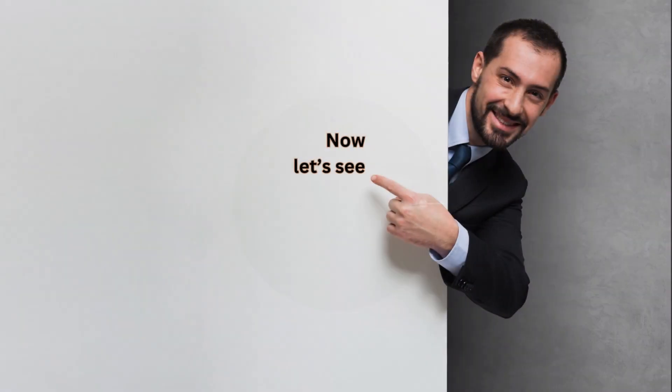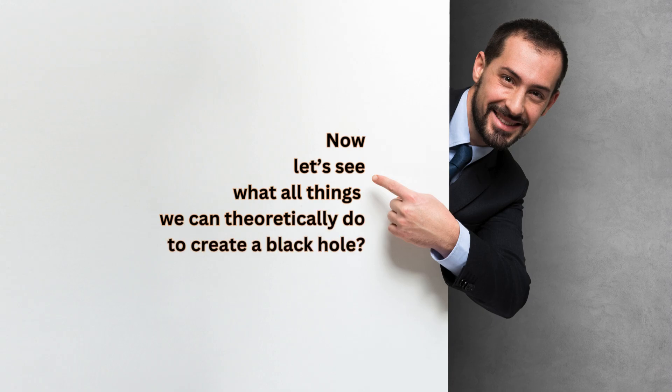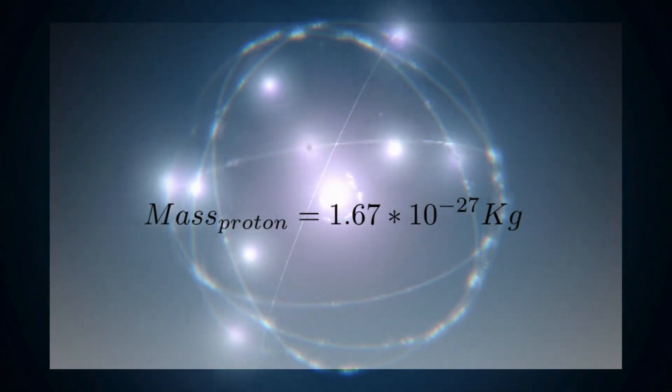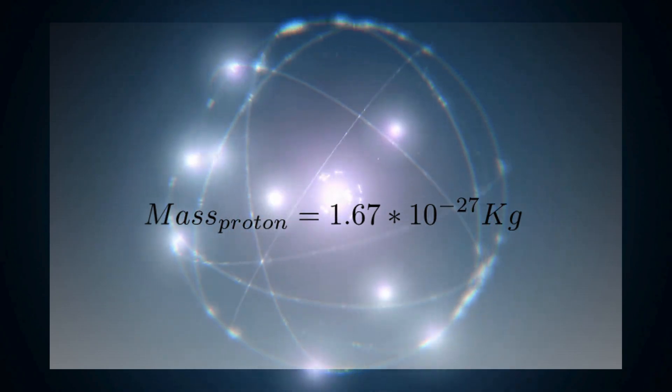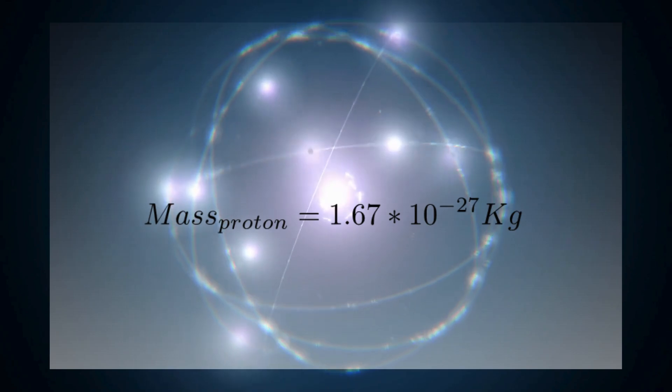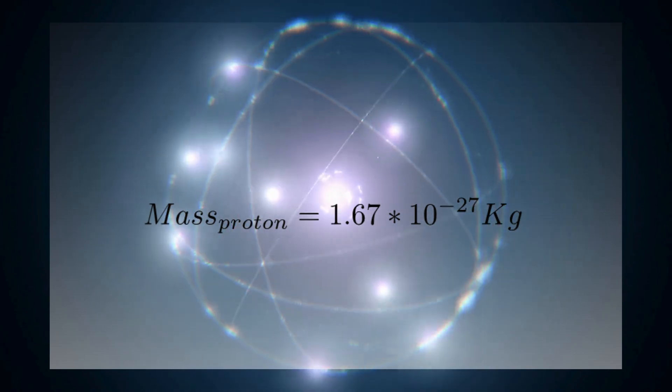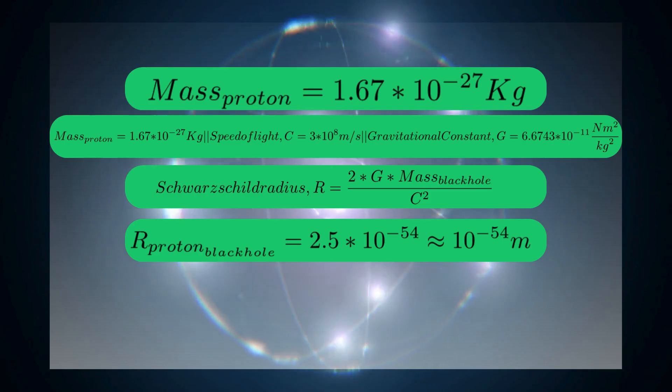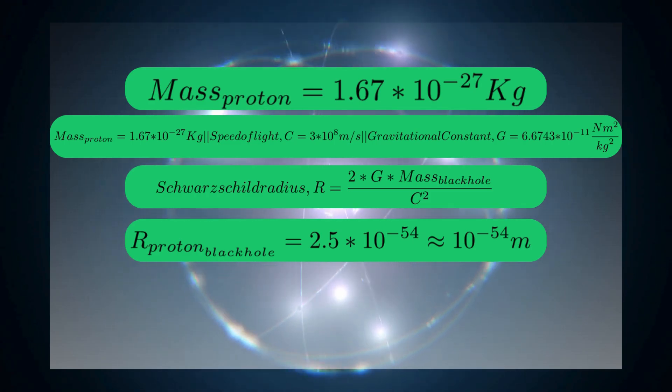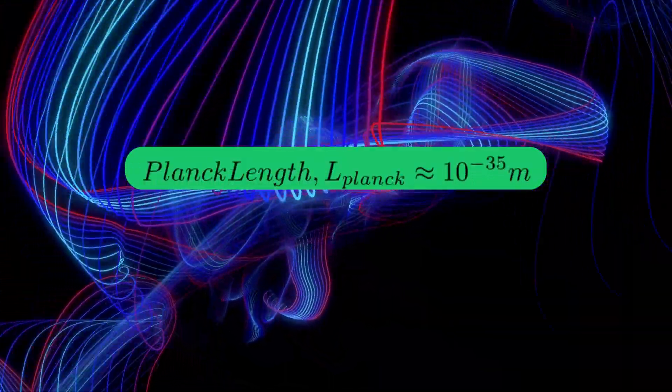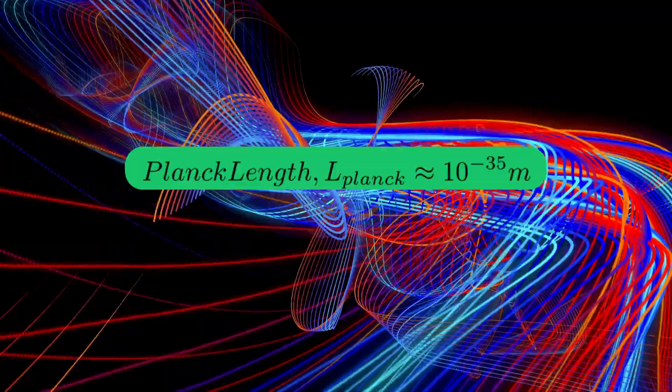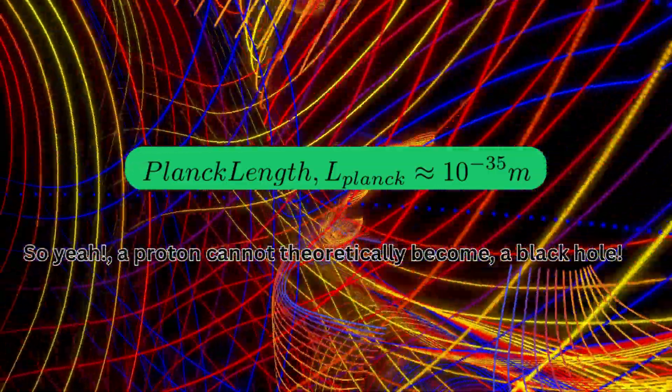Now let's see what all things we can theoretically do to create a black hole. Can we create a black hole out of the proton? Let's see. The mass of a proton is around 1.67 times 10 raised to -27 kilograms. We know the value of c, which is the speed of light. We know the gravitational constant g. From calculation, we get a radius of approximately 2.5 times 10 to the negative 54. Which is a lot smaller, and that's good news, because in quantum mechanics, the smallest length that is allowed to exist is called the Planck's length, which is 10 raised to minus 35. So yeah, a proton cannot theoretically become a black hole.